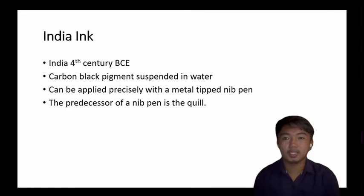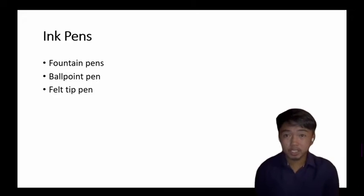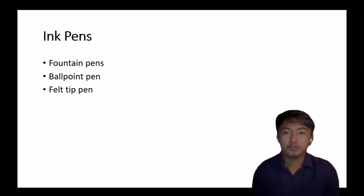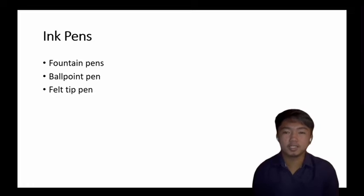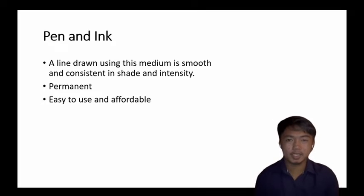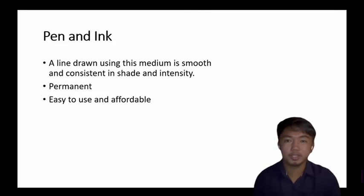The quill is the predecessor of the nib pen. Different types of ink pens create different kinds of lines. Fountain pens are known for the fluidity of their marks. Ballpoint pens help create crisper, more even lines. Felt tip pens are used to create broader types of marks. Pen and ink as a medium produces lines that are smooth and uniform in tone and intensity. It is a harder medium than pencil because it is permanent, but it appeals to many artists as it is reasonably simple to use and good value.